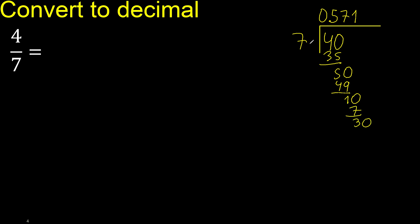7 multiplied by 1 is 7, subtract, complete. Bring down: 30.